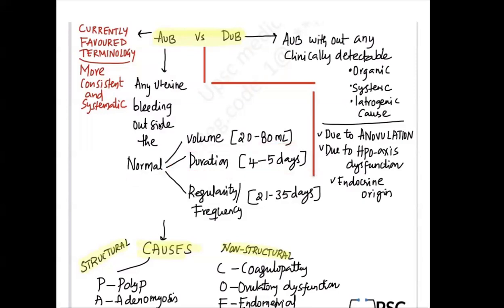Duration is 4 to 5 days and it is regular in frequency, that is, seen in 21 to 35 days. This is the cycle. If it is not following this normal criteria, any uterine bleeding outside this is abnormal uterine bleeding.